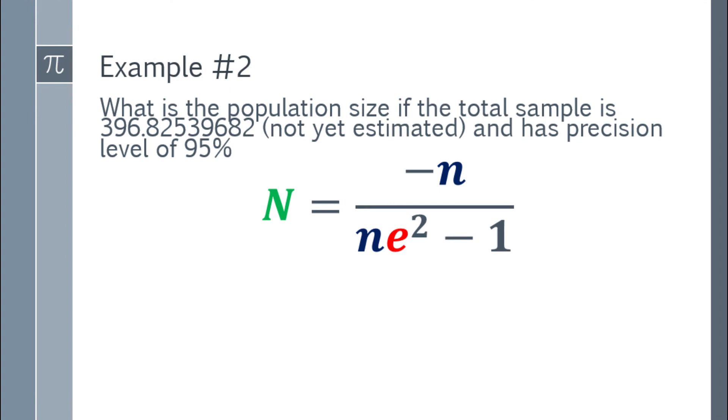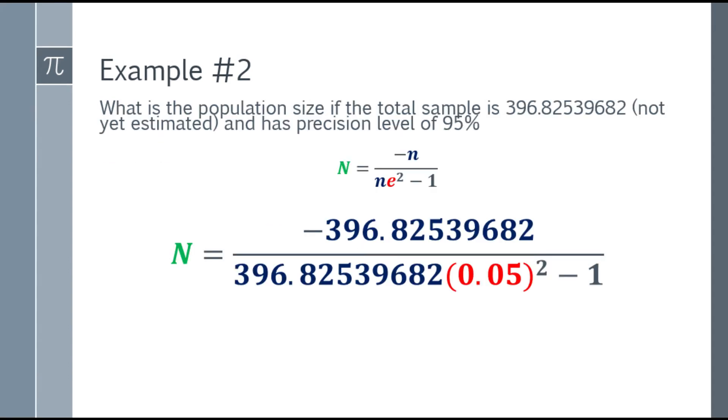Since we have the margin of error, we can now use the formula. Place the formula, and after that, we can now substitute the given values. In the numerator, negative 396.82 and so on, negative—remember, it's negative in the numerator. In the denominator, 396.82 and so on. Multiply it by the margin of error of 5%, or 0.05, and square it. Then minus 1.